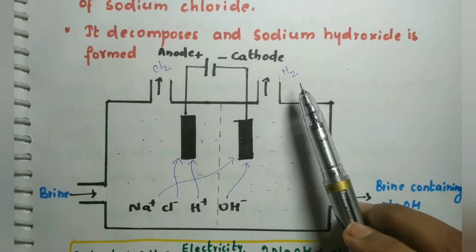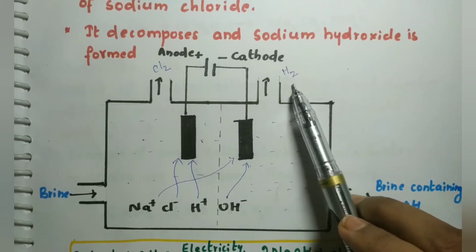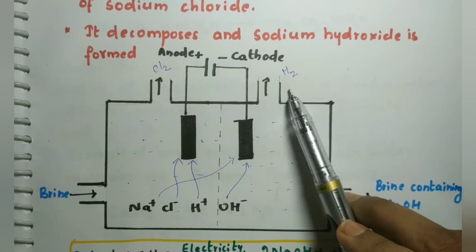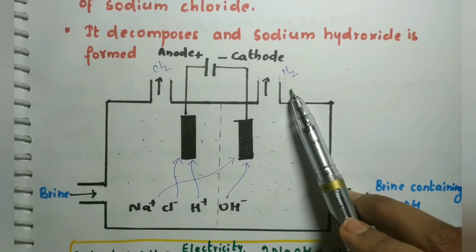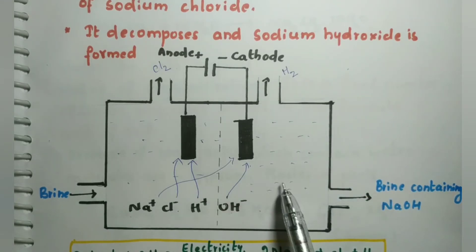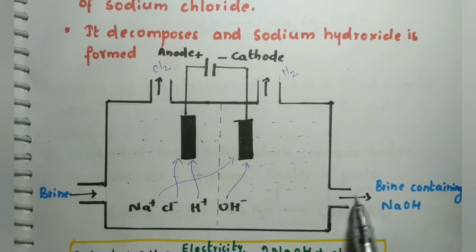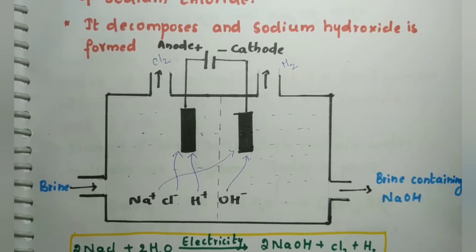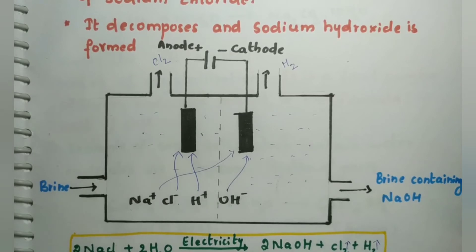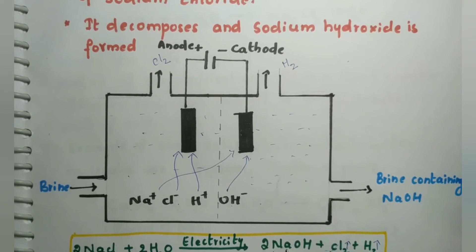NaOH is released through a separate opening. The overall reaction is: NaCl + H2O → NaOH + Cl2 + H2 (after passing electricity). Since both chlorine and an alkali product (NaOH) are produced, this process is called the chloralkali process.